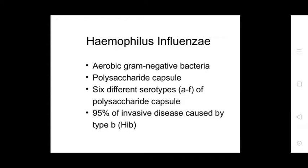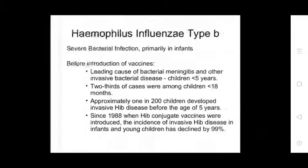Haemophilus influenzae type B causes severe bacterial infections primarily in infants. Before introduction of vaccines, it was the leading cause of bacterial meningitis and other invasive bacteremia diseases in children less than five years. Two-thirds of cases were among those less than 18 months old; approximately 1 in 200 children developed invasive Hib disease before age five.